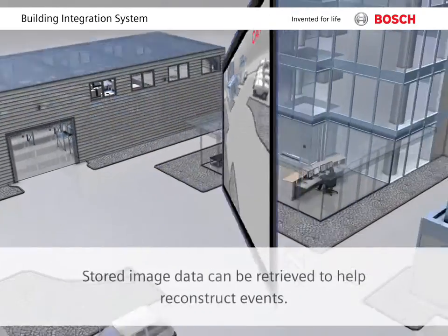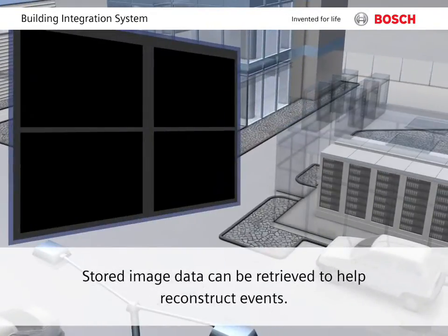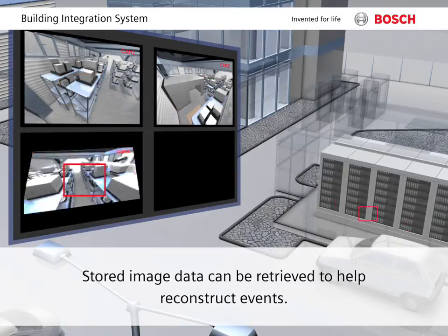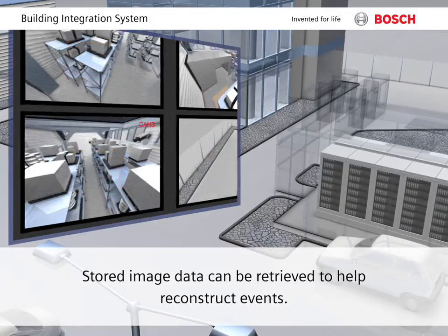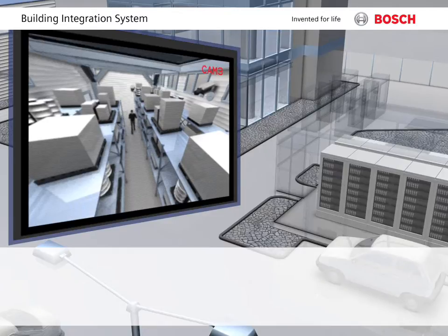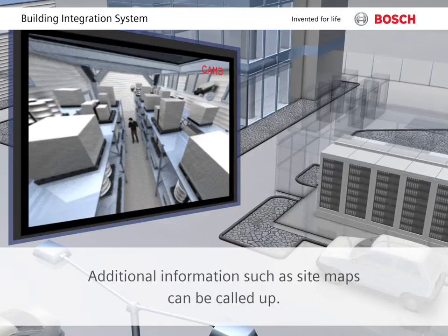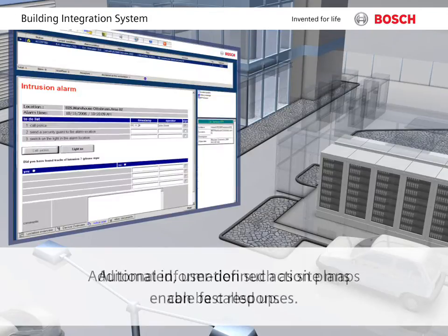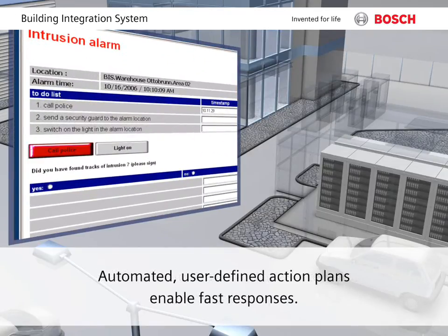Automated predefined action plans serve as guides on how to deal with the situation appropriately. Other useful information, for example location maps with animated icons for alarms, can be called up to facilitate action. Escalation scenarios make sure the situation is handled if the operator fails to react right away.